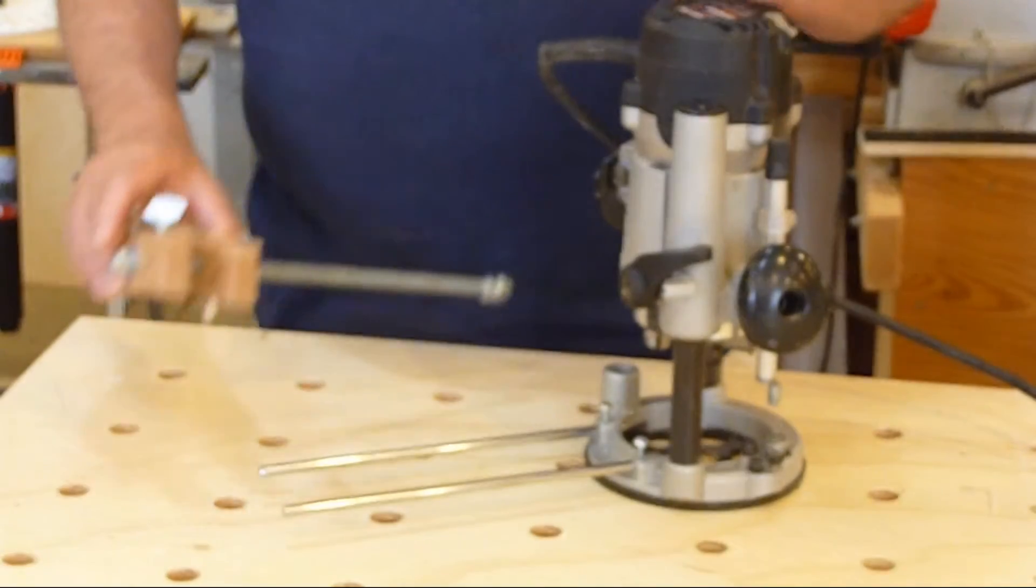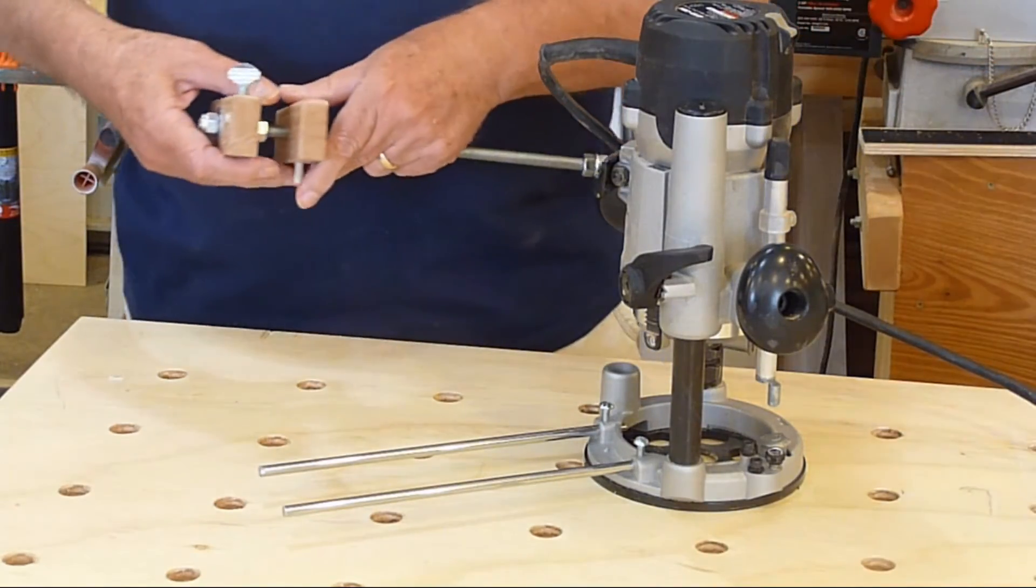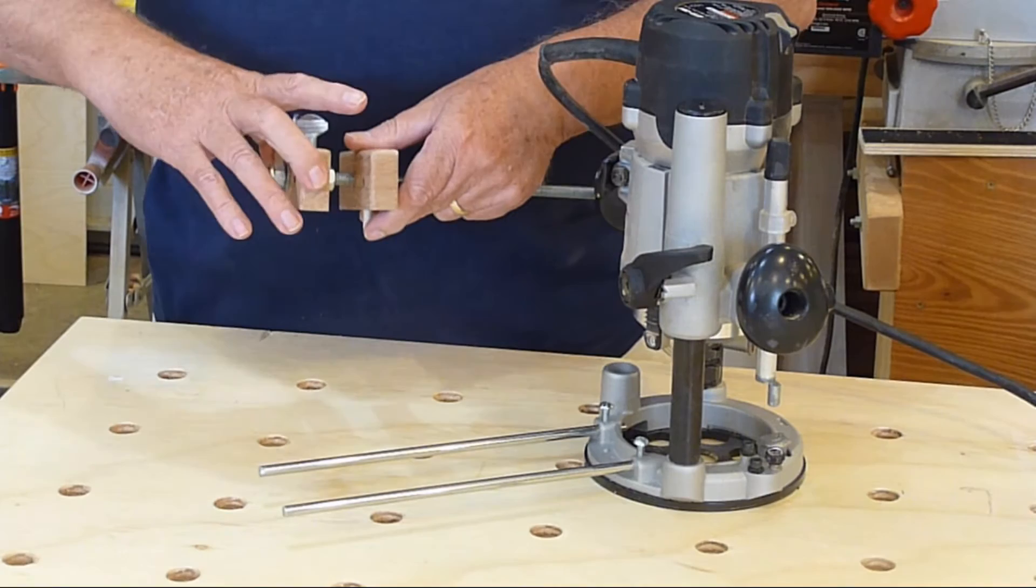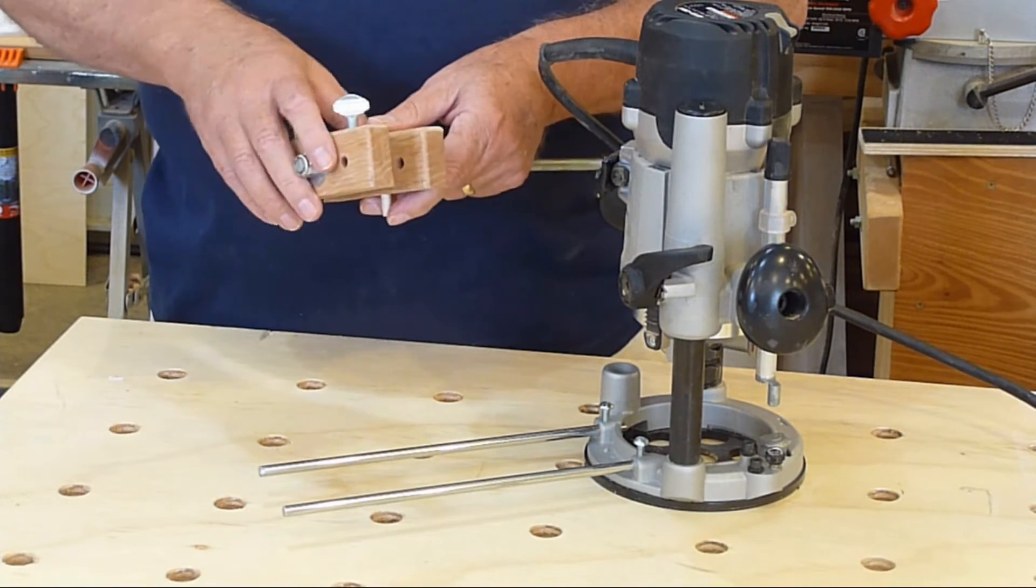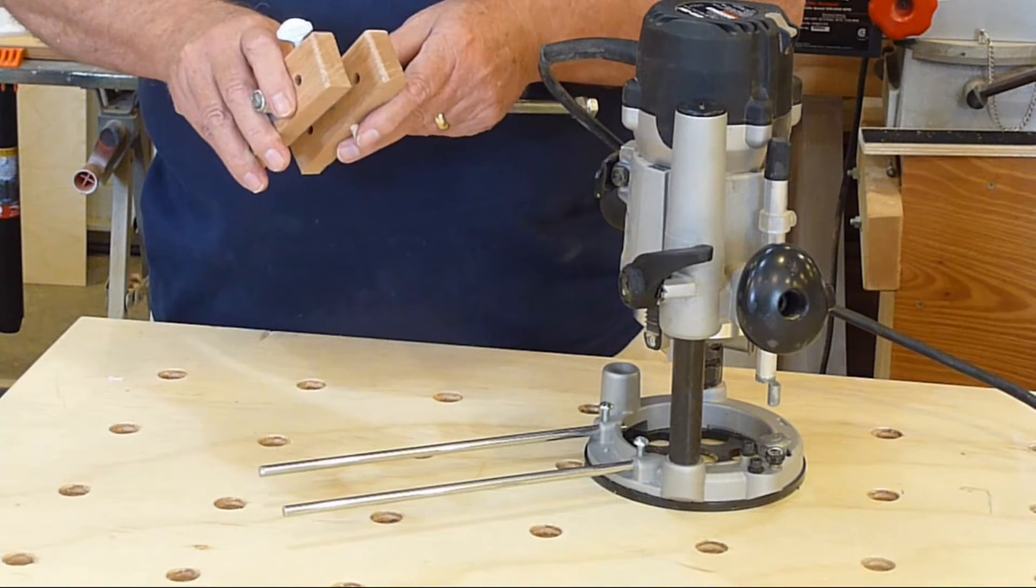I took two pieces of oak, just some scrap I had, and cut them to four and three-eighths inches to give me an inch on either side. I taped them together with blue painter's tape.